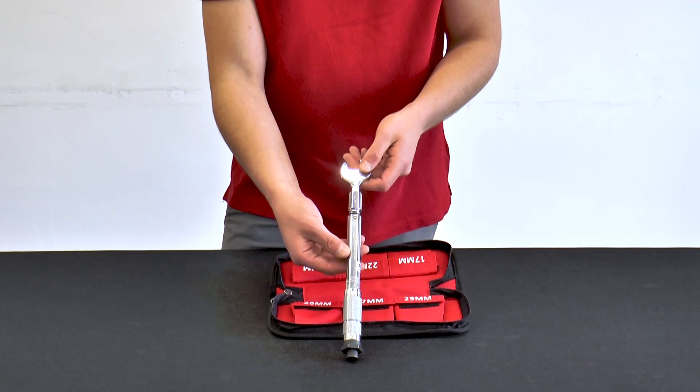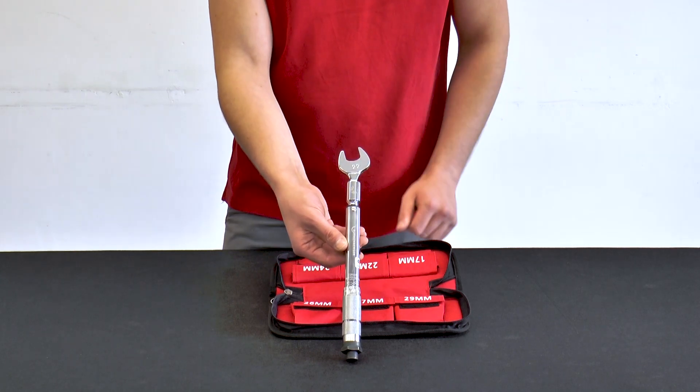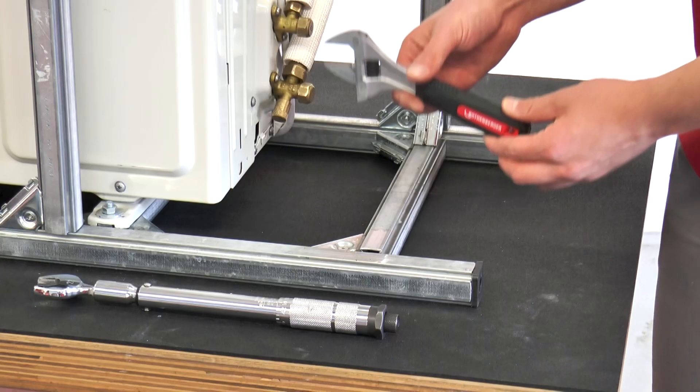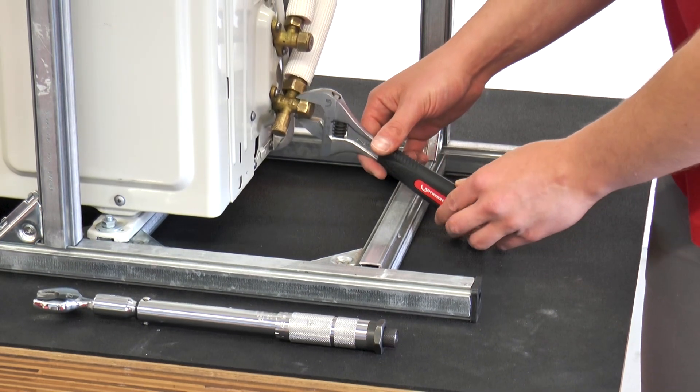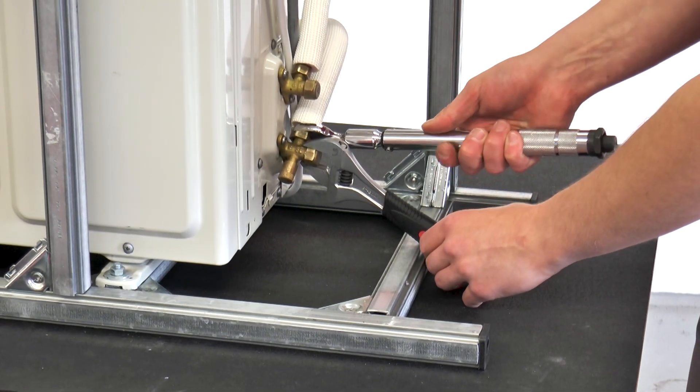After the torque wrench has been set to the required tightening torque, the flare nut can be tightened with the torque spanner. A roller fork wrench is used for counter holding. The flare nut is tightened until the torque wrench makes a loud cracking sound.